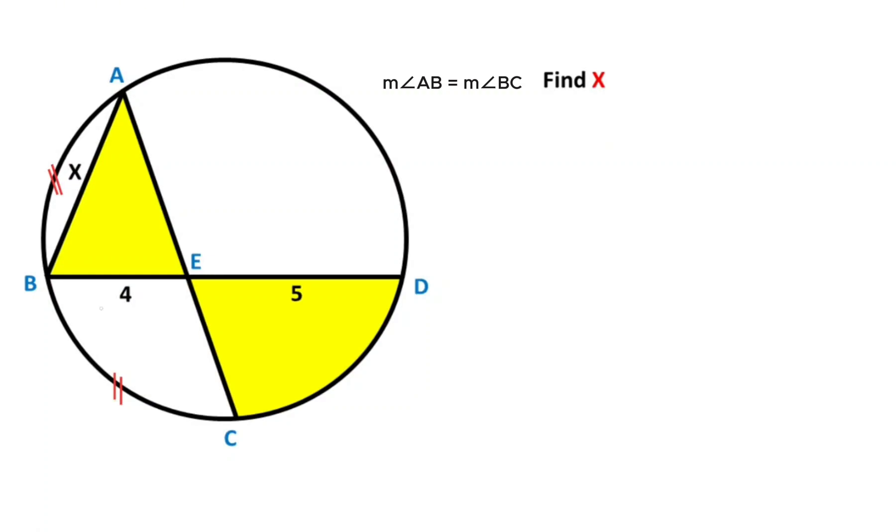Hello everyone, in this video we have one circle. This part is given four, here is given five, and the measure of these two arcs are given as equal. The question is what is the length of x?